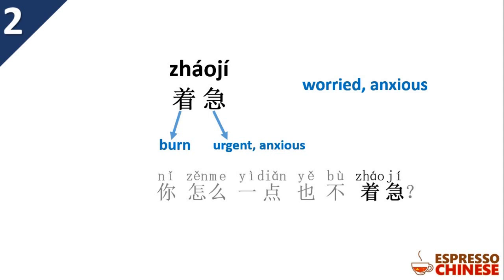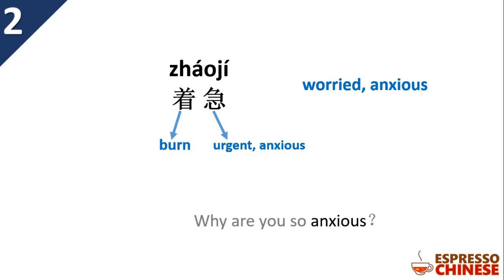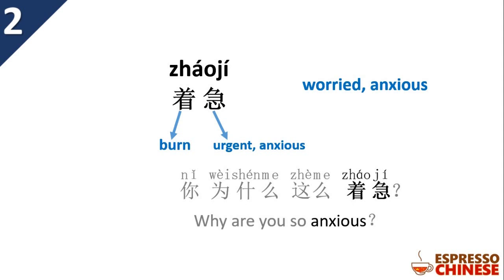Example: 你怎么一点儿都不着急? 怎么 can mean 'how come', and 一点儿都不 is the structure meaning 'not at all', so this means 'How come you're not anxious at all? You're not worried at all?' How do you say 'Why are you so anxious'? You say 你为什么这么着急? 为什么 means 'why', and 这么 means 'so', so 这么着急 means 'so anxious'.